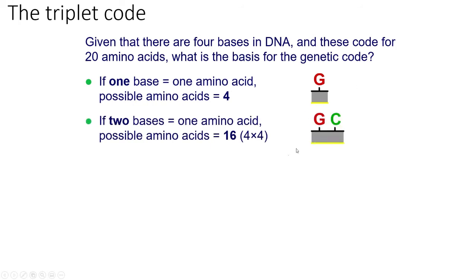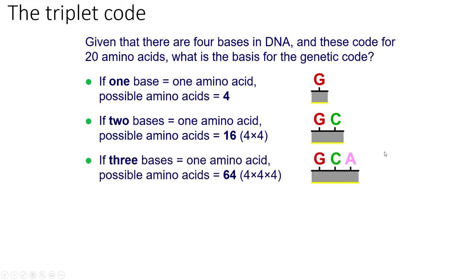If we had two bases, that's four times four, giving 16 possible combinations. We know that can't be right either because there are 20 amino acids. If we use three bases, that's four times four times four — 64 total combinations, which is significantly more than the 20 amino acids. So the triplet code of three bases is how amino acids are placed along the sequence.